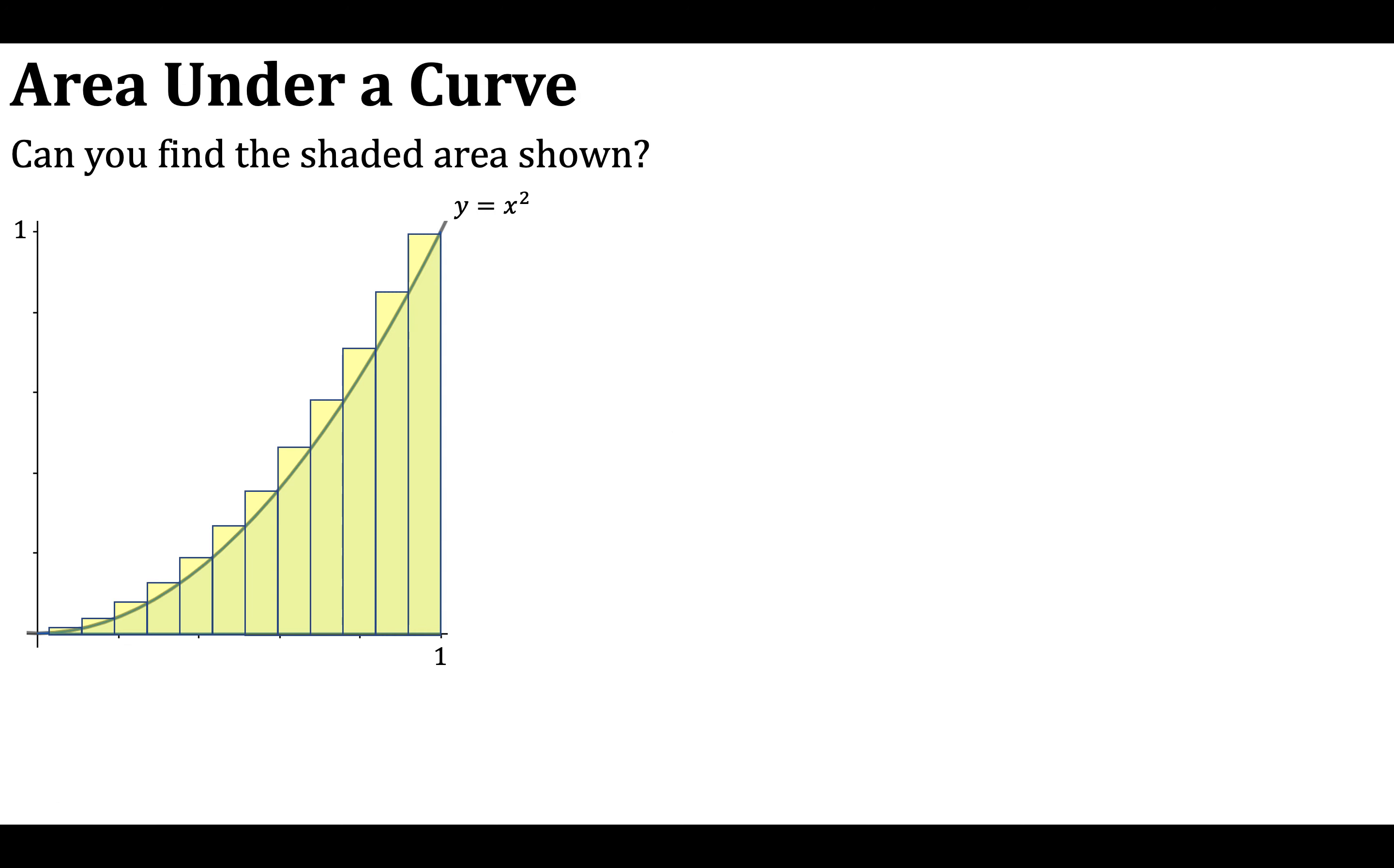Another method might be to use a series of rectangles. But again, you can see that there's this error here, because the area of the rectangles is actually greater than the shaded area shown. We could put the rectangles underneath the curve, like this, but again, there's some of the area now not being included. So we need a more accurate way of being able to find the area underneath a curve.